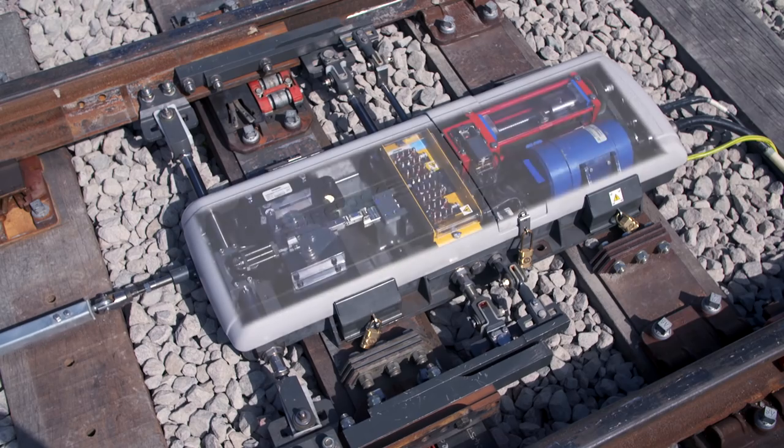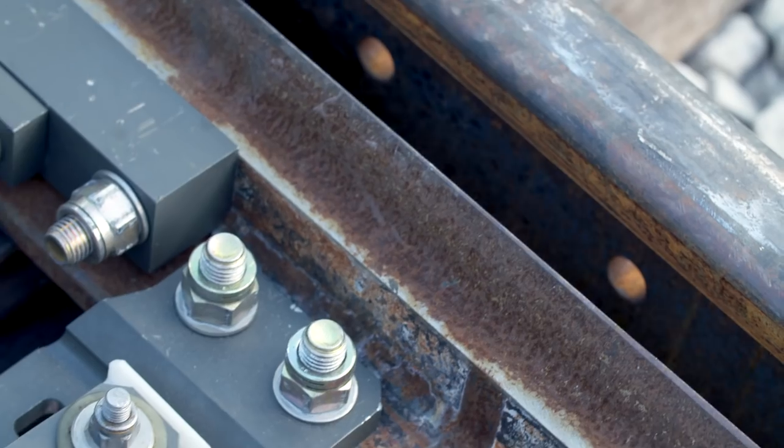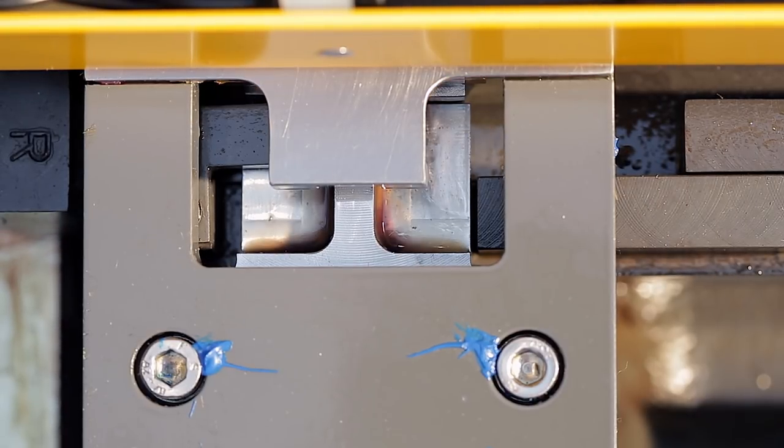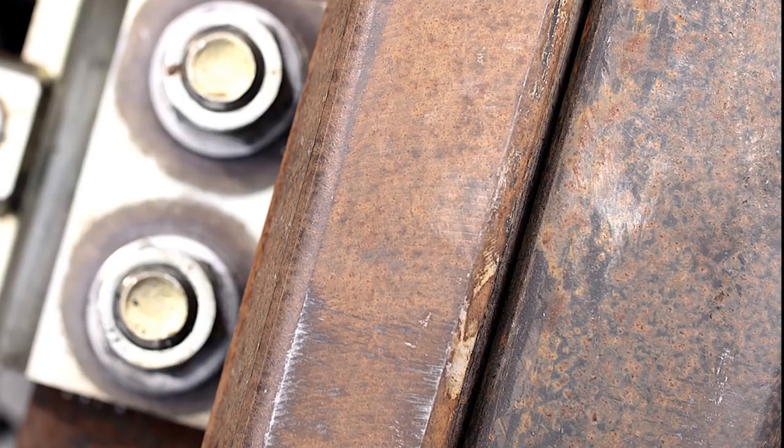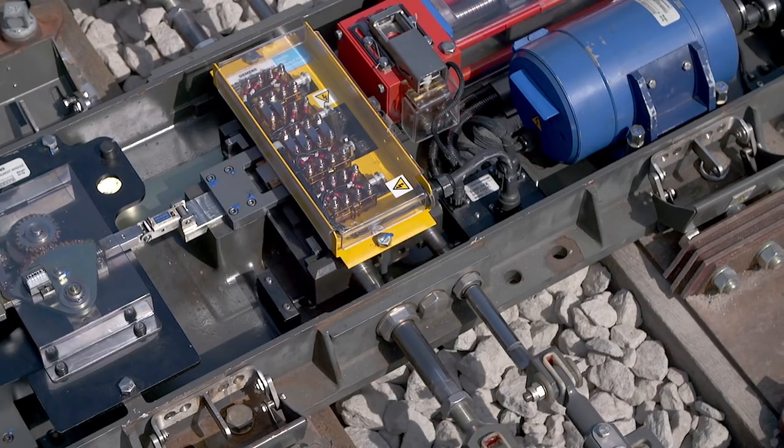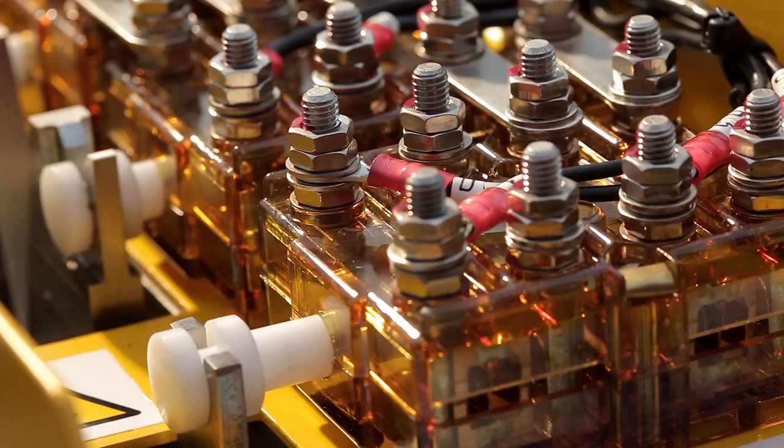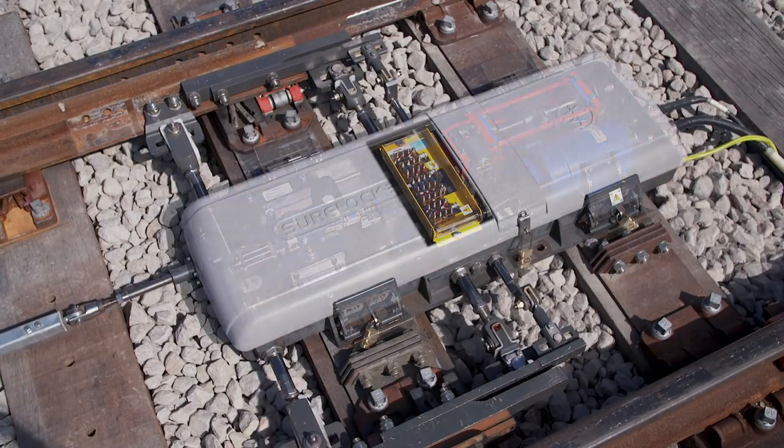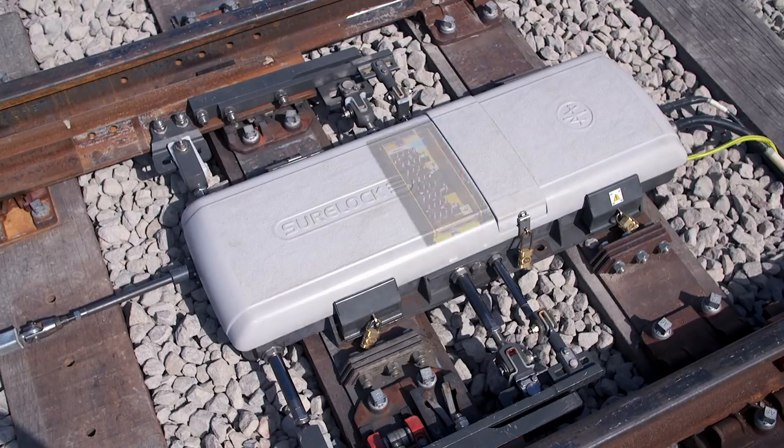As the drives move the rail blades, Shorelock's unique lock dog mechanism secures the blades tight against the running rail. The detection rods operate contacts within Shorelock, providing independent failsafe physical detection. This prevents the risk of a failed rail detection because of a broken stretcher bar.